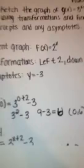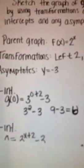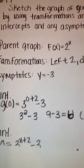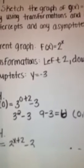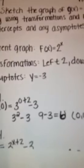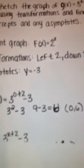To find the y-intercept, you plug in 0 for x, so then it's 3^(0+2) - 3, so 3^2 - 3 = 9 - 3 = 6.